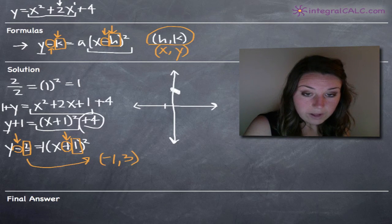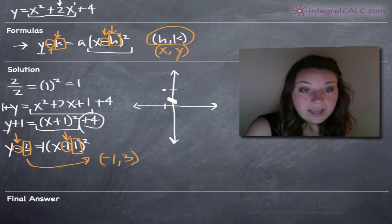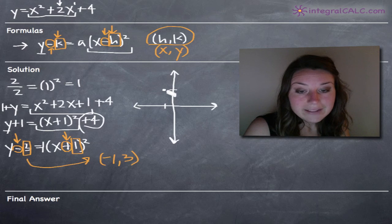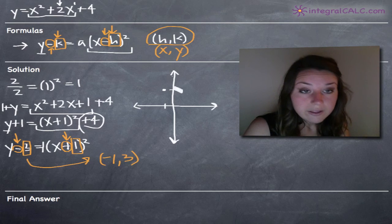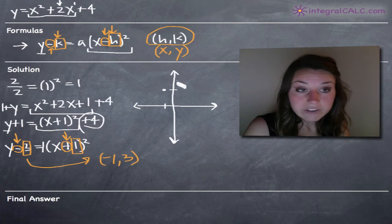We've got negative one and about three. So let's call that our vertex. And then again, it's helpful to have one other point. So I like to usually find the y-intercept if I can.